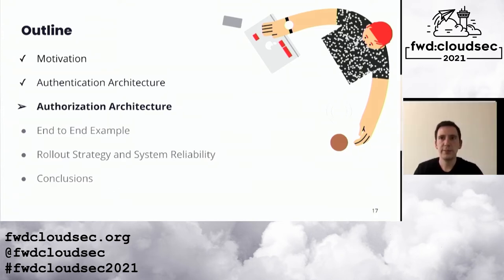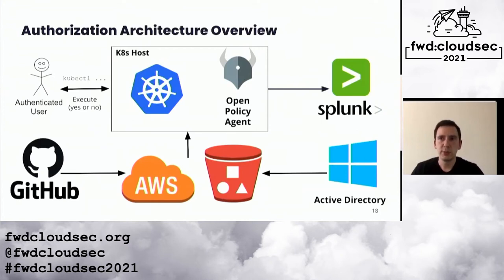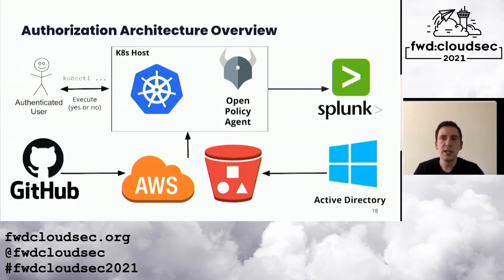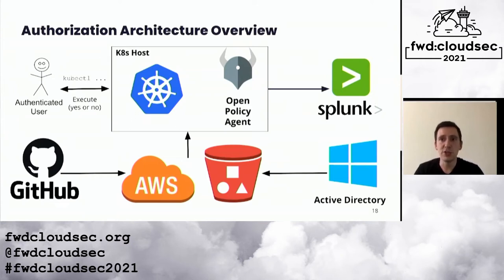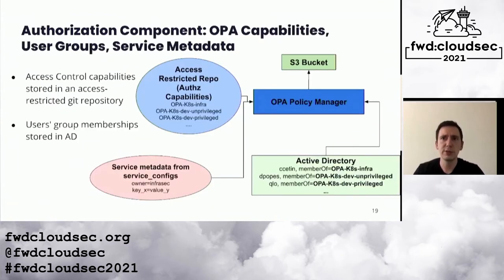Here's an overview of the architecture. At the top, you've got the user who interacts with Kubernetes using kubectl. Kubernetes sends a request to Open Policy Agent, which makes the authorization decision. At the bottom, we've got the data that feeds into that decision — we collect data from Git and from Active Directory, then put that data into an S3 bucket for Open Policy Agent to read.